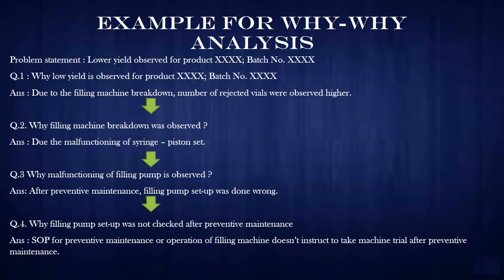To clarify the concept, we will go through one example where the 5-Why Analysis Tool is used. Consider a problem statement where a product yield is observed on the lower side. First, we will ask: why is low yield observed for this particular product? If the answer is that due to a filling machine breakdown, the number of rejection vials was observed on the higher side, causing the yield to be on the lower side. Then we will ask the next question to the answer of the first question: why was the filling machine breakdown observed? If the answer is that due to the malfunctioning of the syringe piston set, the machine breakdown occurred.